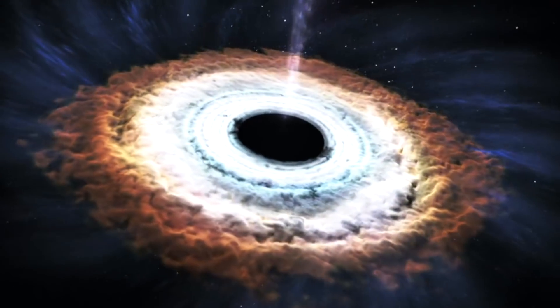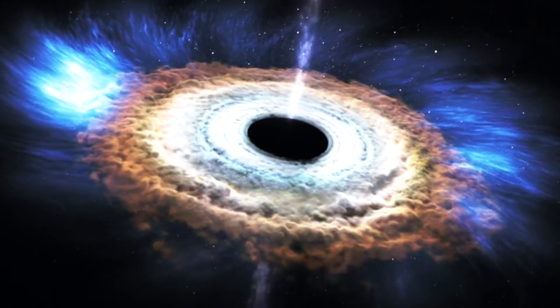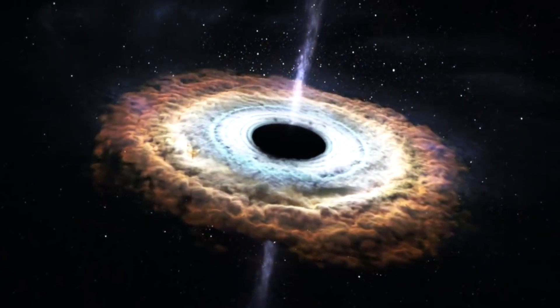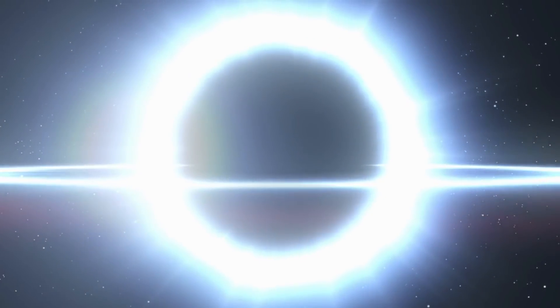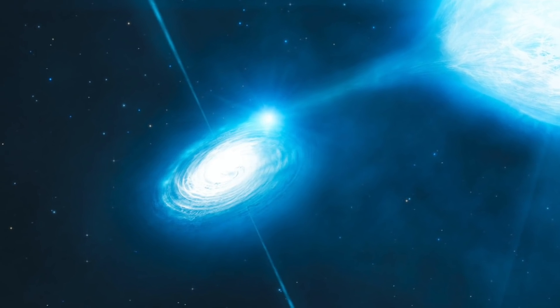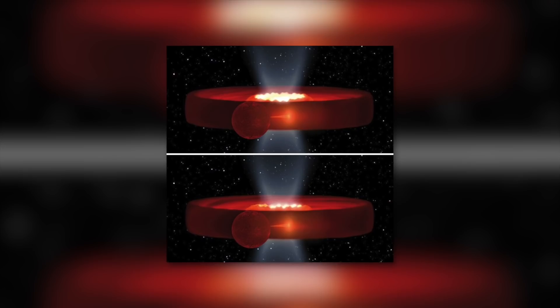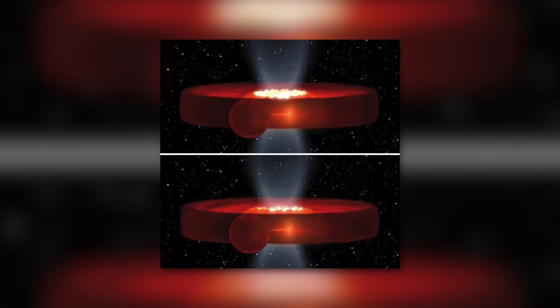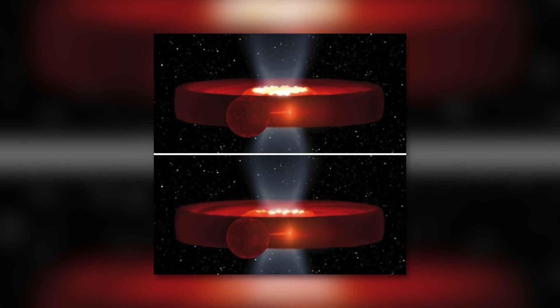Also, the mass of matter that a black hole can absorb at once is limited. Therefore, if there is more matter near the event horizon of a black hole than the object can just absorb, the corresponding matter forms a so-called accretion disk. Such a formation can also be seen in the case of Swift J1357.2.